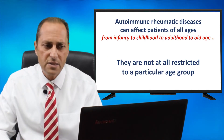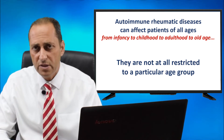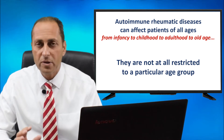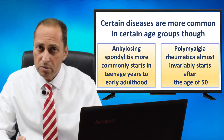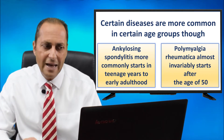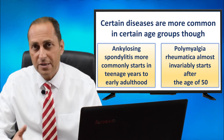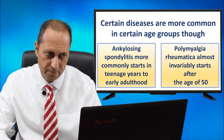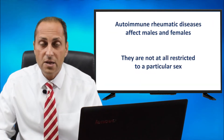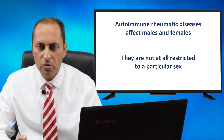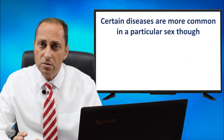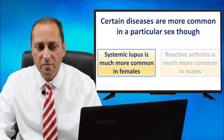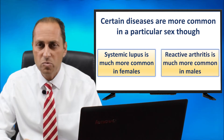Autoimmune rheumatic diseases can affect patients of all ages — from infancy to childhood to adulthood to old age — and are not restricted to a particular age group. Certain diseases are more common in certain age groups though: ankylosing spondylitis more commonly starts in teenage years and early adulthood, while polymyalgia rheumatica almost invariably starts after the age of 50. These diseases affect both males and females, though systemic lupus is much more common in females, and reactive arthritis is much more common in males.